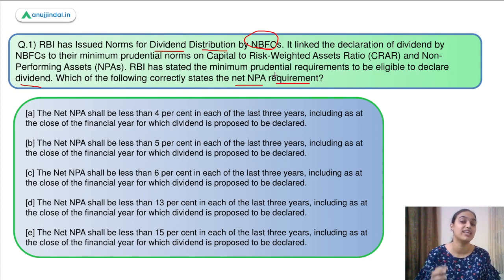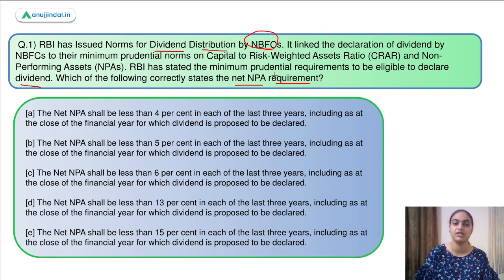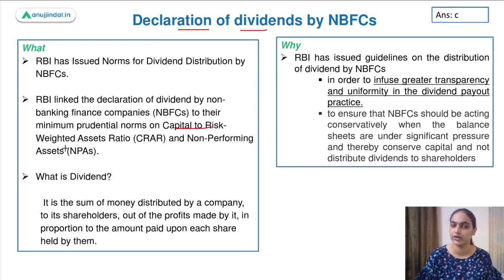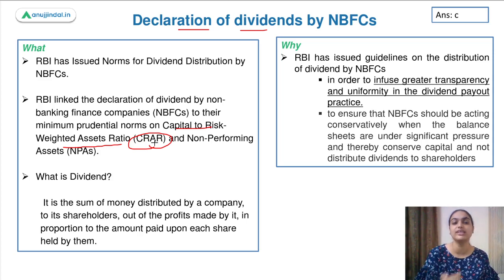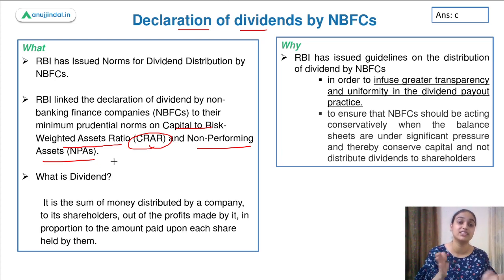Recently, RBI came up with a notification where it notified some norms which NBFCs have to follow if they want to declare dividends. There are certain requirements specified — NBFCs should have a minimum CRAR and their net NPAs should not exceed a certain level. This ensures that NBFCs are strong enough in terms of maintaining capital and not having too many stressed assets. Only if the NBFC has enough capital and can deal with non-performing assets should it utilize its profits to declare dividends.